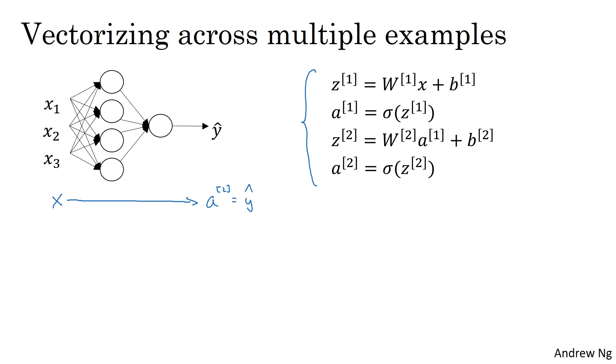Now, if you have m training examples, you need to repeat this process for the first training example, x superscript round brackets 1 to compute y hat 1. Then x2, use that to generate prediction y hat 2, and so on down to xm to generate prediction y hat m. And in order to write this with activation function notation as well, I'm going to write this as a2 square brackets, round bracket 1.